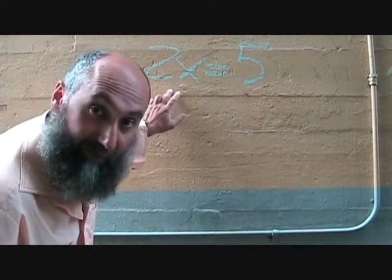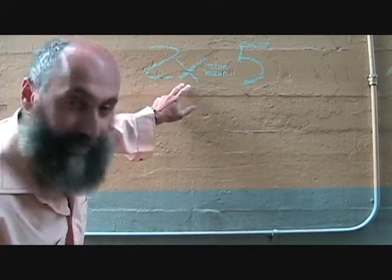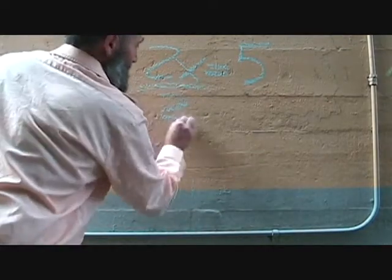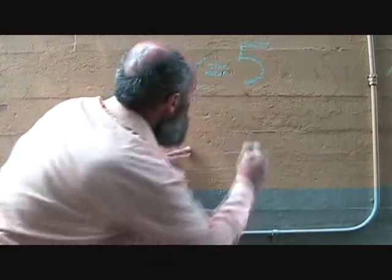Over here, we've got 2x is equal to 5, so you've got to, this is multiplication, you've got to divide by 2, and you do it on both sides.